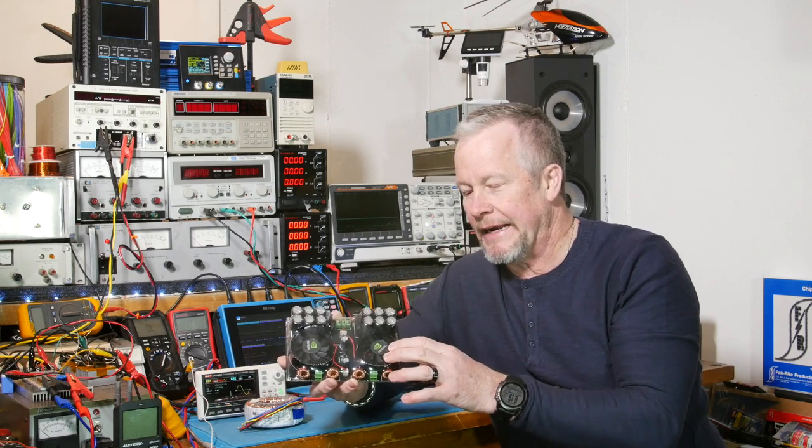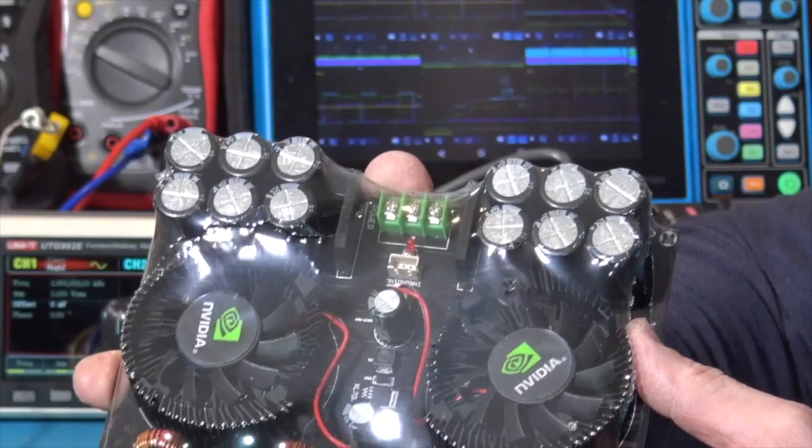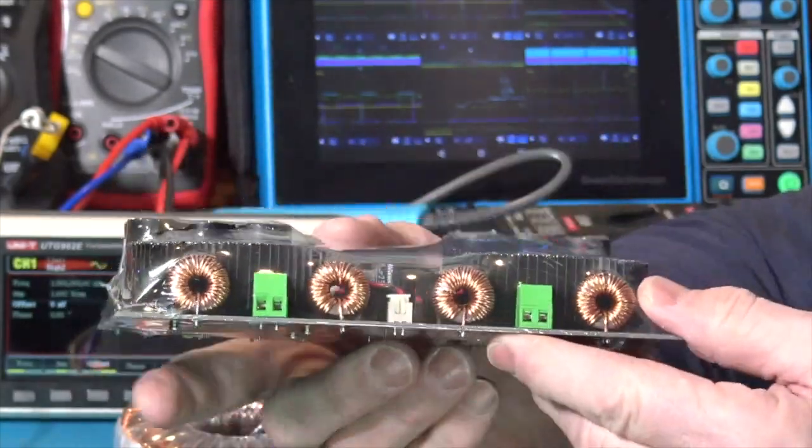There's a TDA 8954 module under each one of these heat sinks. And, I mean, this heat sink is a fan. It's a heat sink with a fan on it. So, pretty cool.